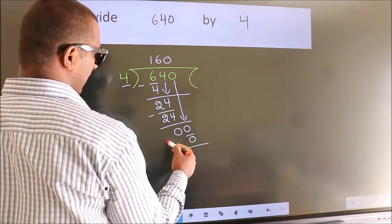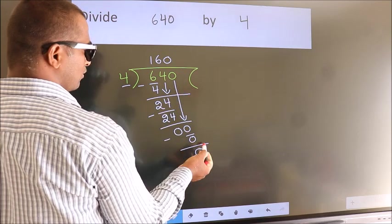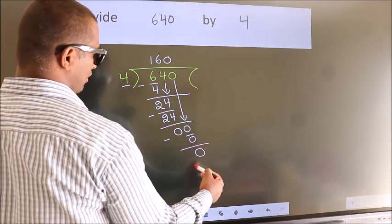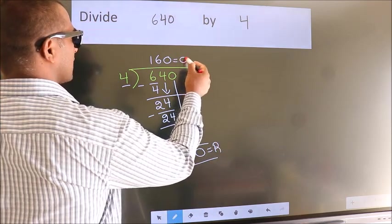Now we subtract, we get 0. No more numbers to bring down. So we stop here. This is our remainder. This is our quotient.